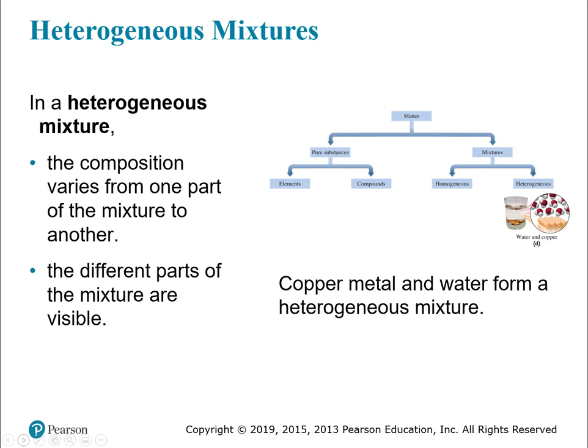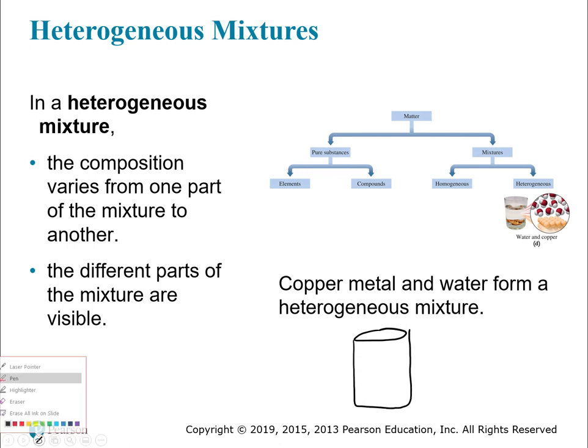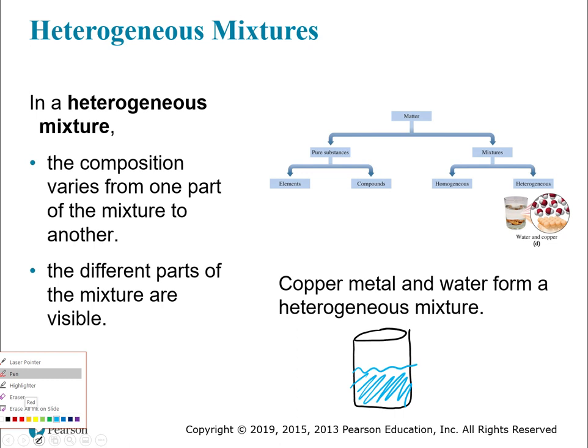Now we're covering heterogeneous mixtures. In those, the composition varies from one part of the mixture to another. So if you have a piece of metal and water in a beaker, that's a mixture — but you can very clearly see where the water is and where the metal is. It is visibly different. That's the key distinction between homogeneous and heterogeneous.